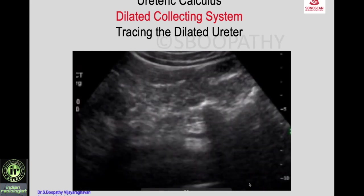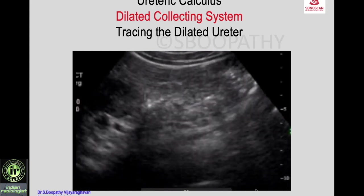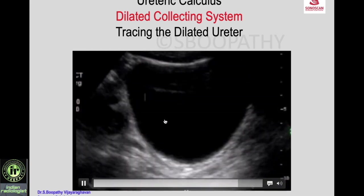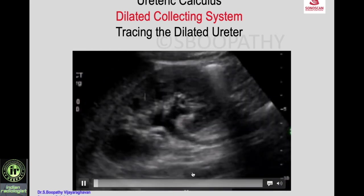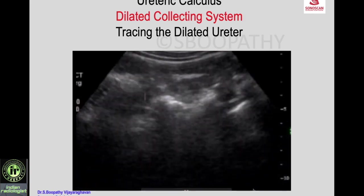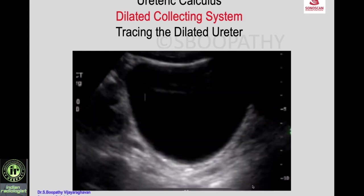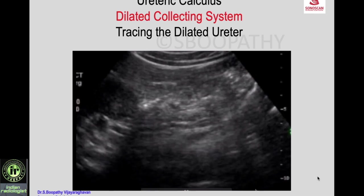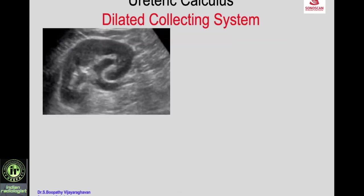Here is a case where you trace the upper ureter, then the mid ureter — you see the mid ureter dilated and then the lower ureter — and you see a calculus at the lower ureter, the distal-most ureter. This is how a ureteric calculus is diagnosed. When there is a dilated ureter there is no difficulty. Here is another example: dilated achillecal pelvis, and 80% of ureteric calculi are at the ureterovesical junction.